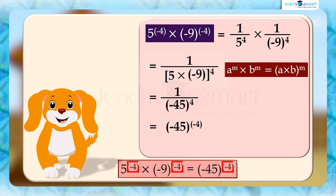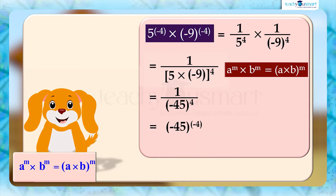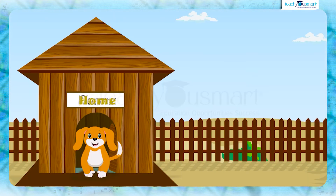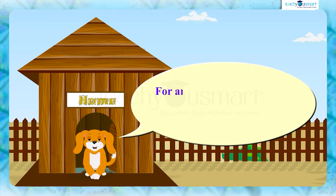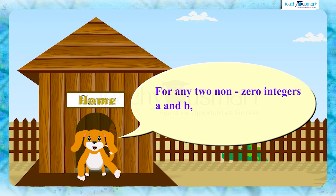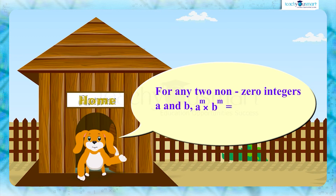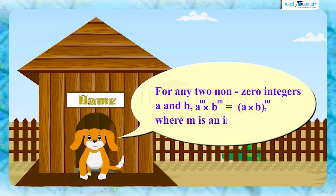By observing this we can see that the exponents are the same and the product of the bases 5 and (-9) is (-45). That is, a raised to m multiplied by b raised to m equals (a × b) the whole raised to m is also applicable to negative values of m. Thus we can say that for any two non-zero integers a and b, a^m × b^m = (a × b)^m where m is an integer.